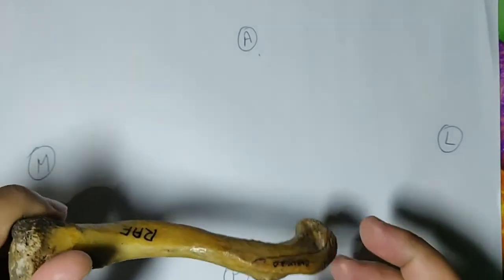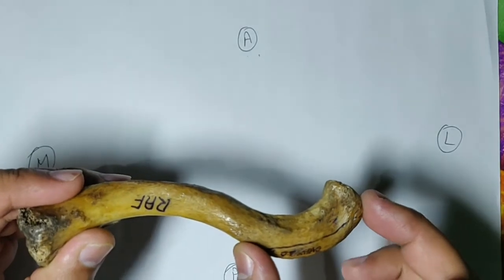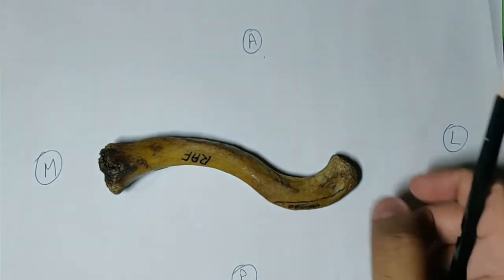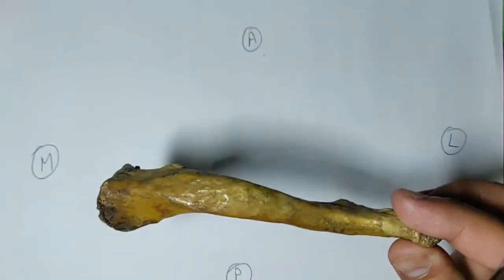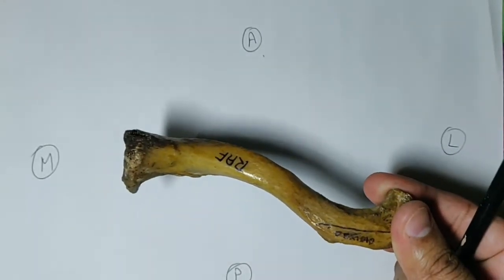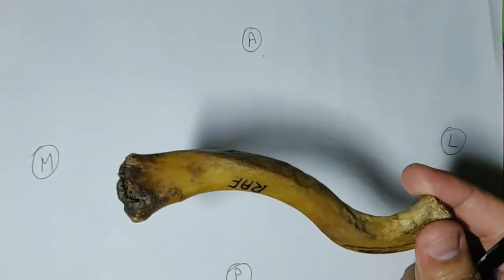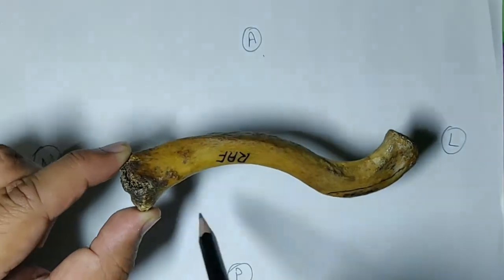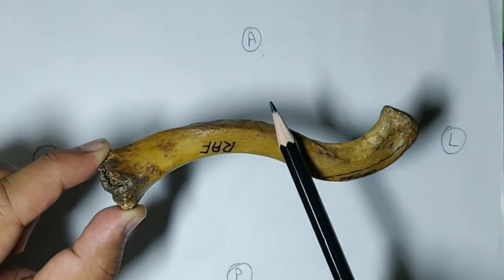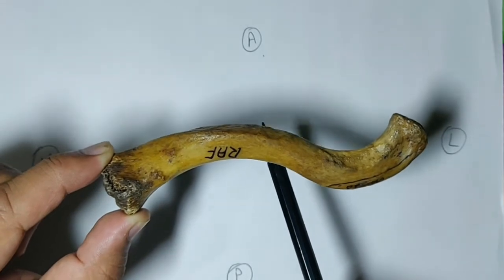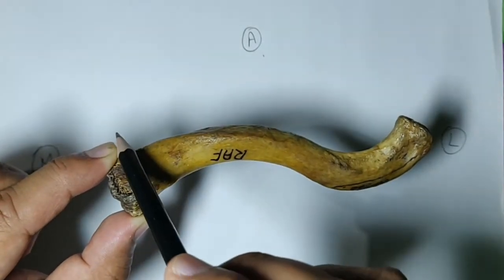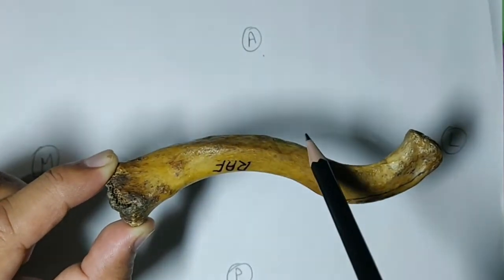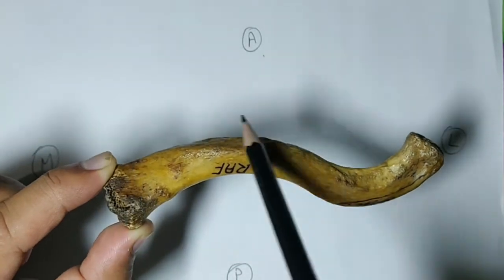Both the conoid tubercle and trapezoid ridge give attachment to the conoid and trapezoid parts of the coracoclavicular ligament. Now we will discuss about the medial two-third. The medial two-third is rounded and has four surfaces: anterior, posterior, superior, and inferior. The anterior surface is convex forward and gives origin to the pectoralis major muscle — specifically the clavicular fibers of pectoralis major.